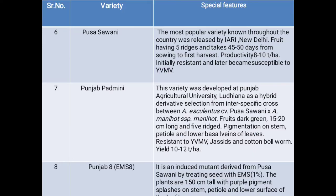The next variety is Pusa Sawani, the most popular variety known throughout the country, released by IARI New Delhi. Fruits have 5 ridges and take 45 to 50 days from sowing to first harvest. Productivity is 8 to 10 tons per hectare. Initially resistant but later becomes susceptible to yellow vein mosaic virus.